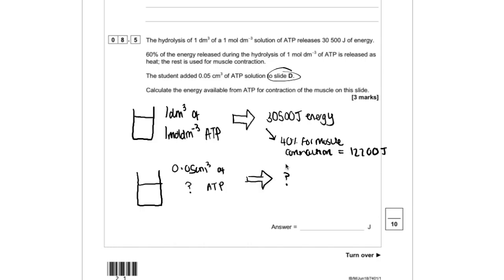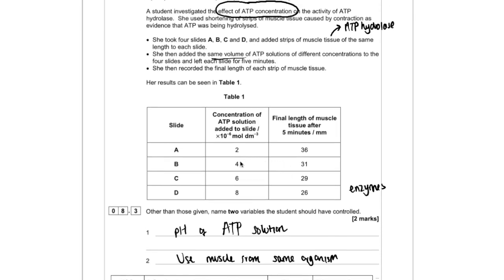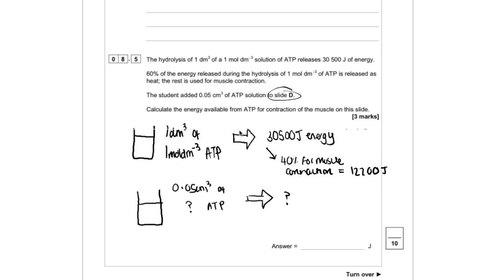So if we scroll back up, we can see that in slide D, we've got 8 times 10 to the power of minus 6 moles per decimetre cubed of ATP solution. So we can incorporate that into our workings out.